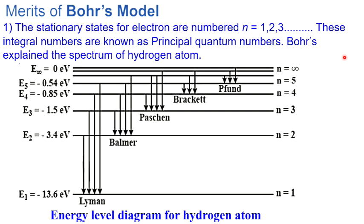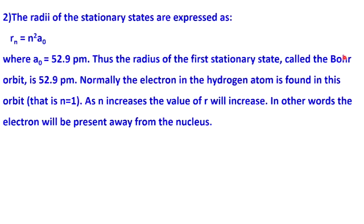The stationary states for the electron are numbered n equal to 1, 2, 3, etc. These integral numbers are known as principal quantum numbers. Bohr's model explains the spectrum of the hydrogen atom. The radii of stationary states are expressed as rn equal to n squared times a₀.